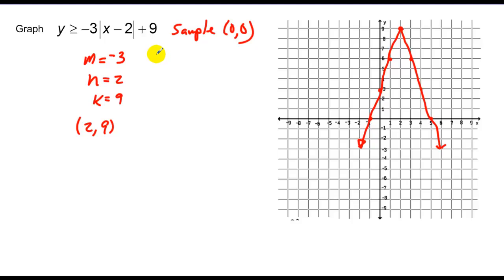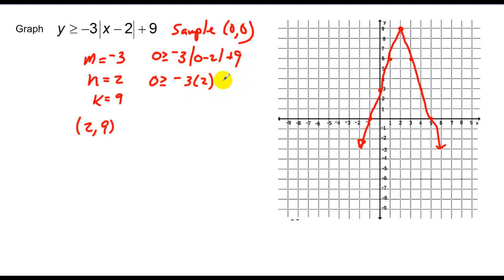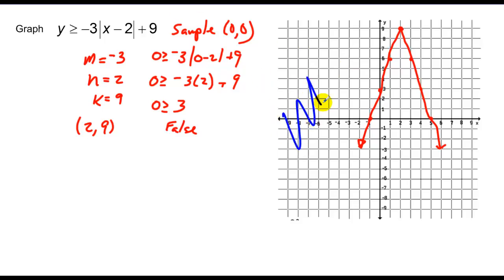Plugging in: 0 greater than or equal to negative 3 times the absolute value of 0 minus 2, plus 9. That gives 0 greater than or equal to negative 3 times 2 plus 9, which is 0 greater than or equal to 3. That's false. Therefore, I don't want to shade the (0, 0) region or the interior of this graph. So I shade everywhere outside the graph.